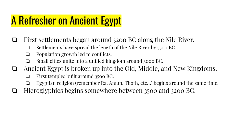Africa is also the site of ancient Egypt — we did a whole lecture on that, so I'm just going to give you a couple of slides. Remember the first settlements in Africa along the Nile River started around 5200 BC, and those settlements grew along the length of the Nile River until they had spread its entire length by 3500 BC. All this population growth led to conflicts, and then these small cities began to unite until you had the upper and the lower kingdoms, and then Narmer united the upper and lower kingdoms into the kingdom of Egypt.